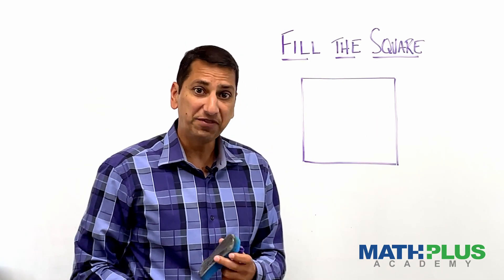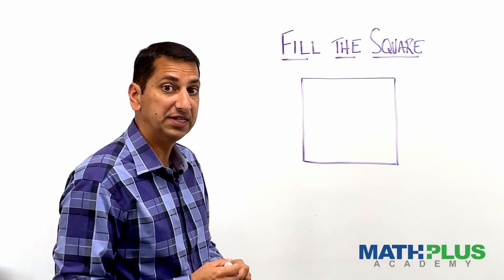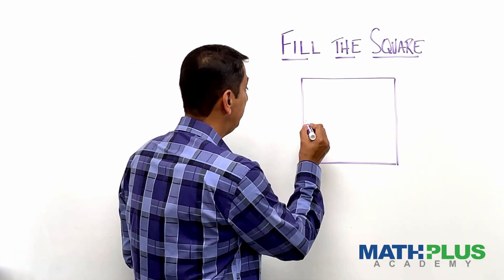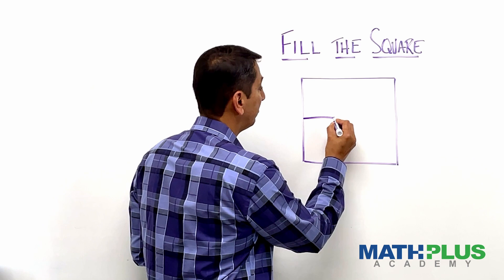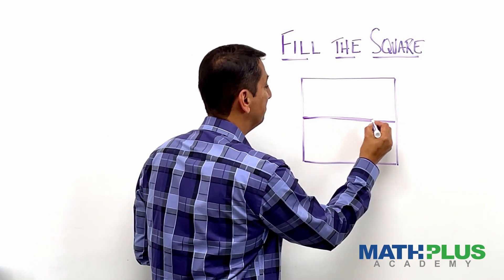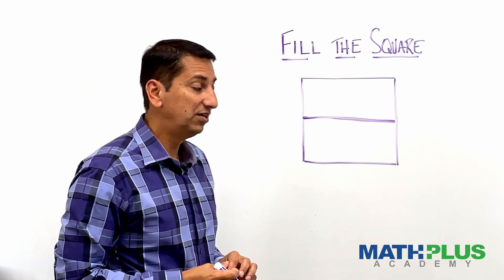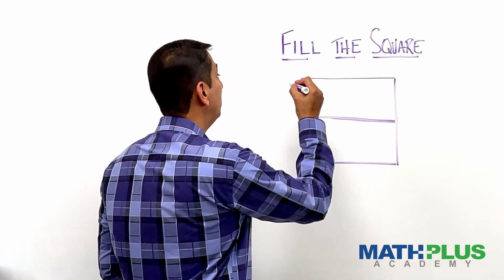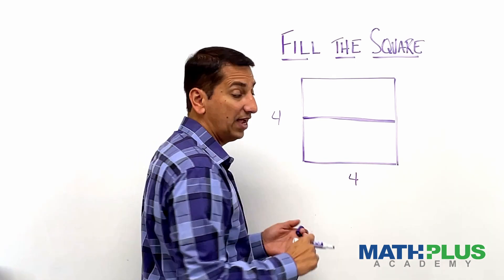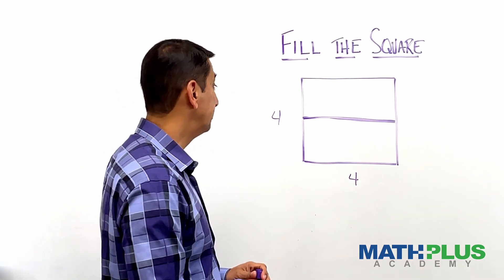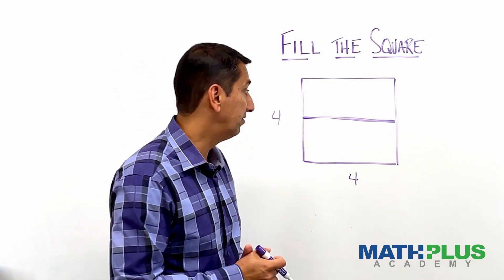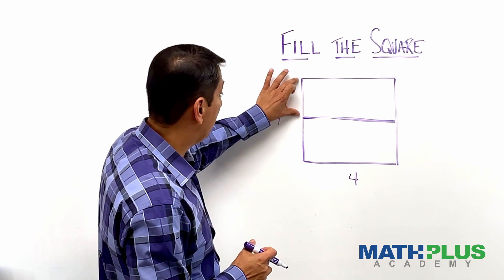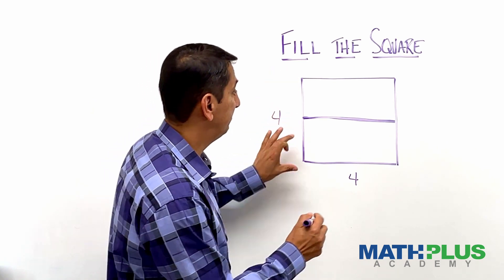And right off the bat, I can kind of see something you might be noticing as well, that if we draw a line straight across, straight across the middle of our square, and let's just say the squares have sides four. Okay, so we'll make this four and we'll make this four. Again, the size of our original square doesn't matter. I'm using four because it's going to be easy to think about. Then, of course, this became two and this became two because I divided it in half.